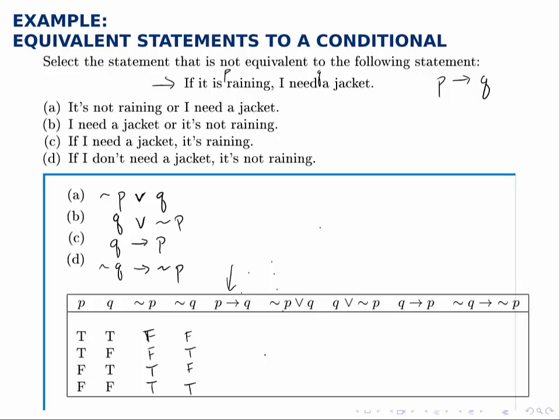Then for P implies Q, the implication is only false if the condition is met and the conclusion is not. So if P is true and Q is false, that's the only time P implies Q will be false. That only happens in the second row, so otherwise it's true.